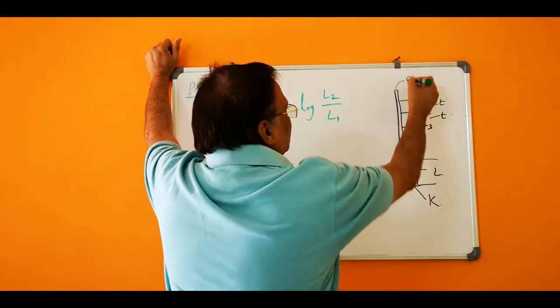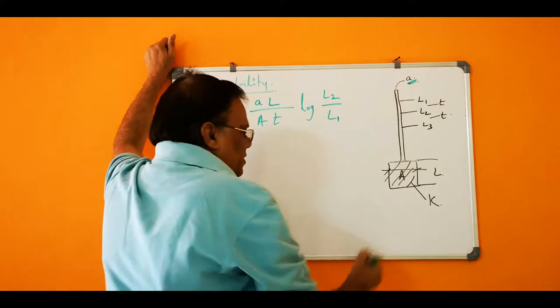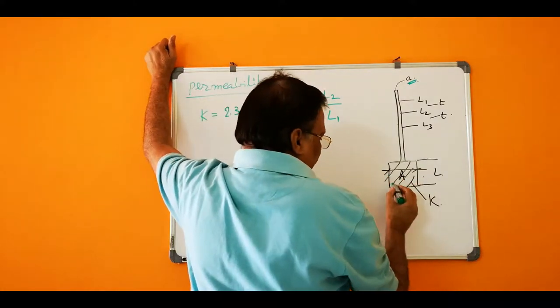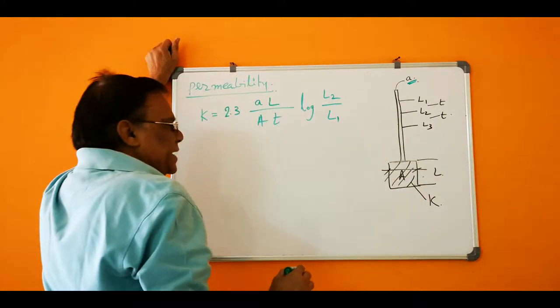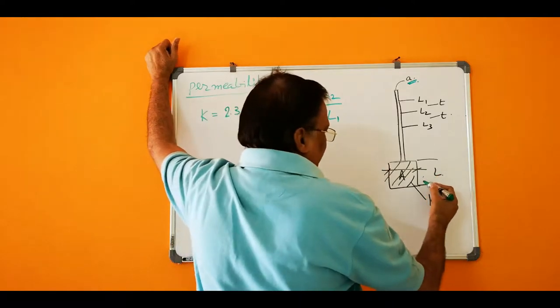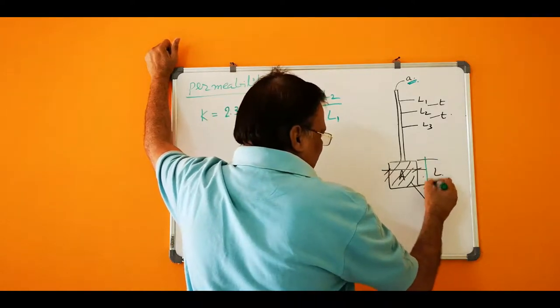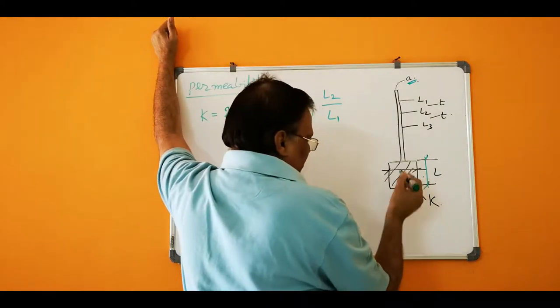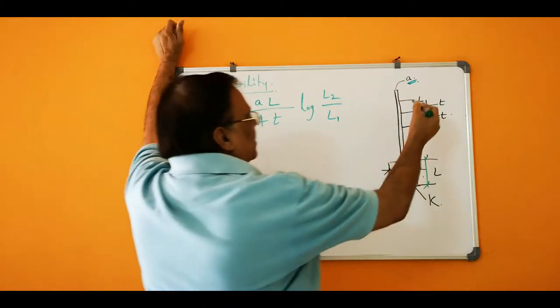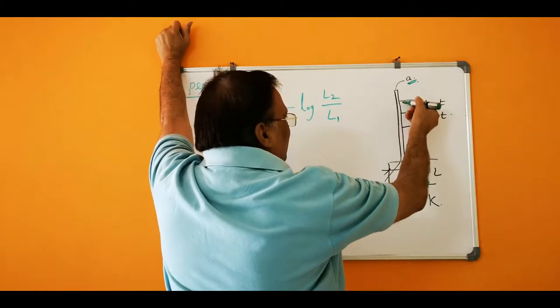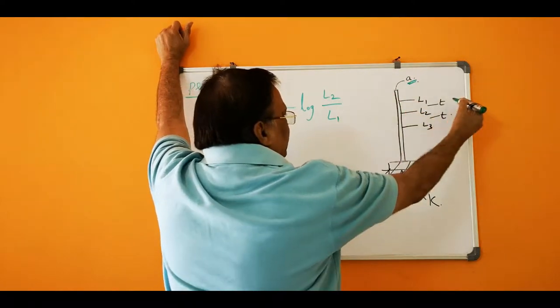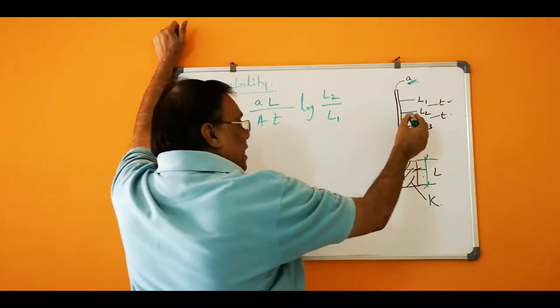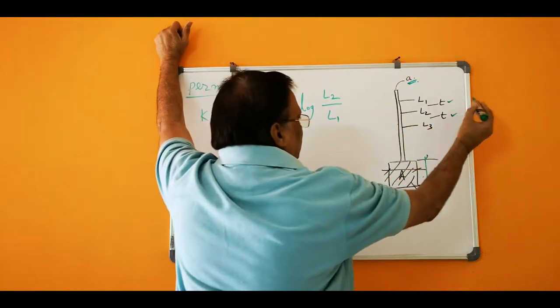The standing pipe area is A, the sample area is A, and L is the length of the sample. K is the permeability of the sample, and the water is falling from L1 to L2 in time T, and L2 to L3 also in time T.